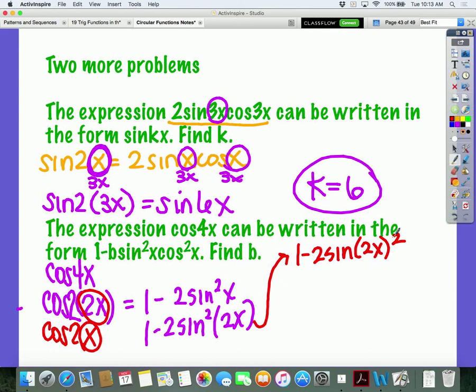You have a sine 2x? You have 1 minus 2. What is the formula for a double angle for sine 2x? 2 sine x. We'll have sine x cosine x that is being squared.